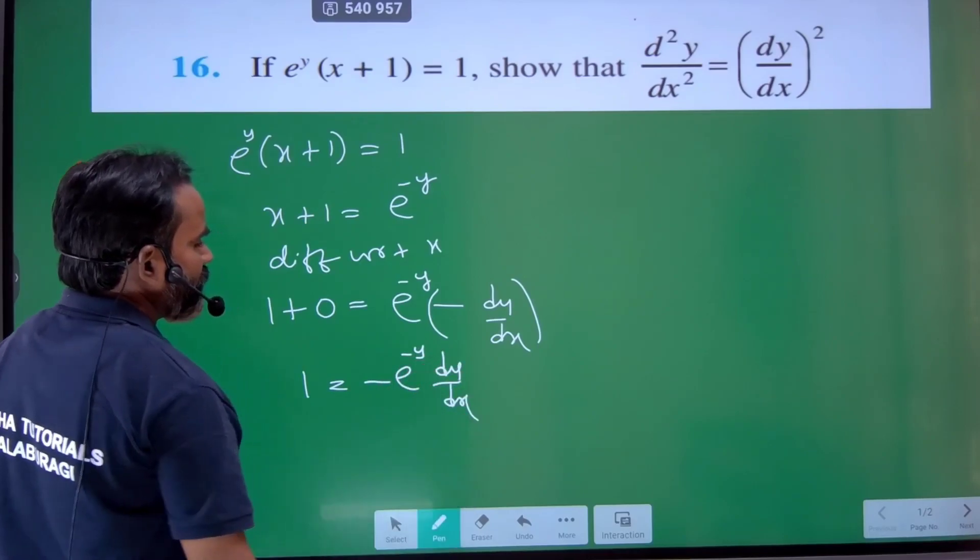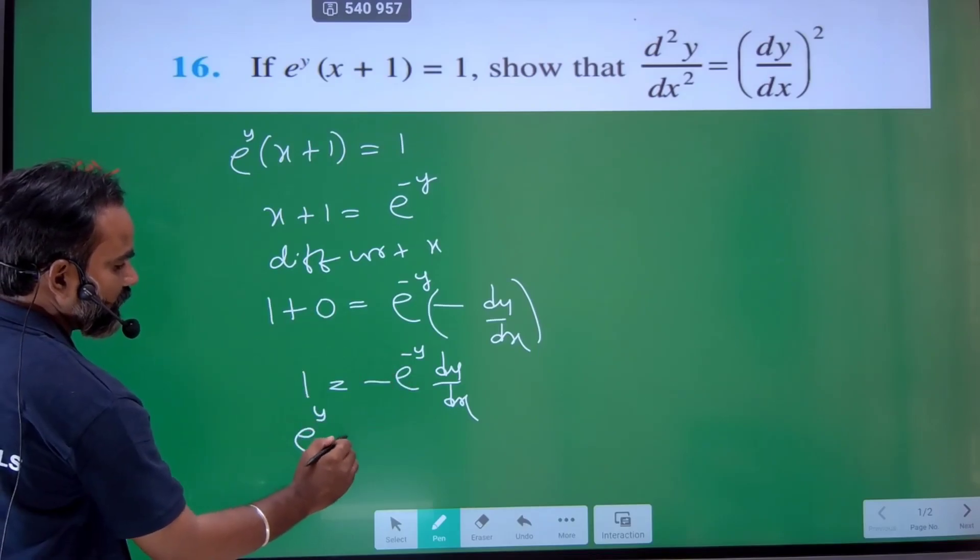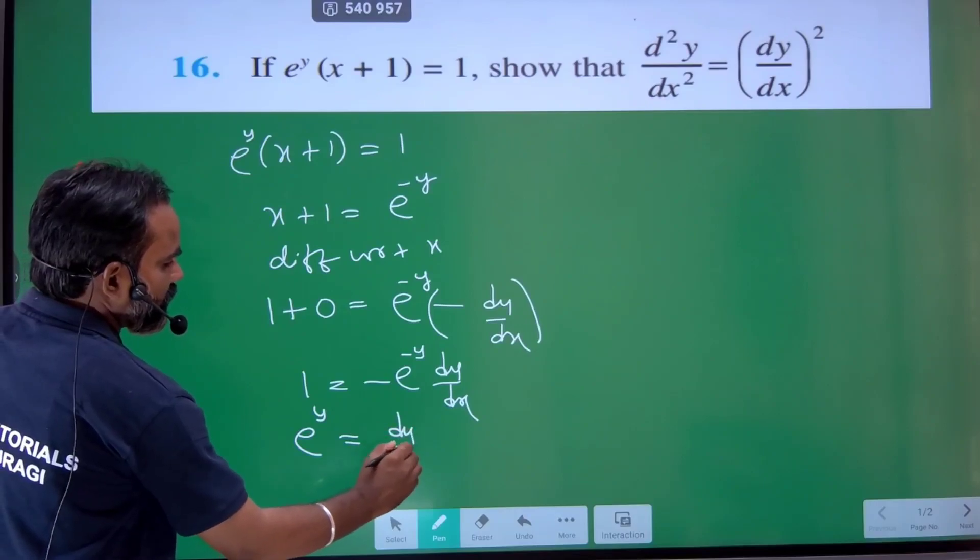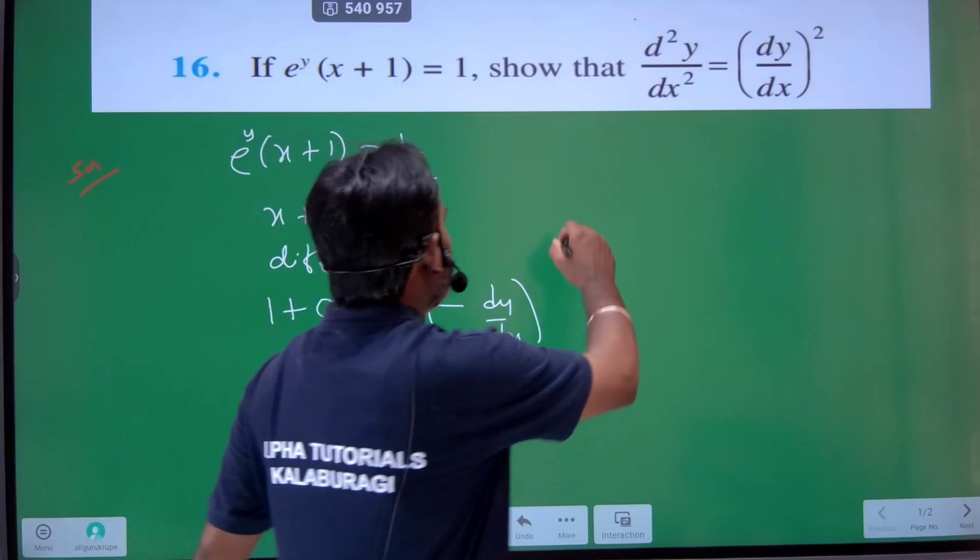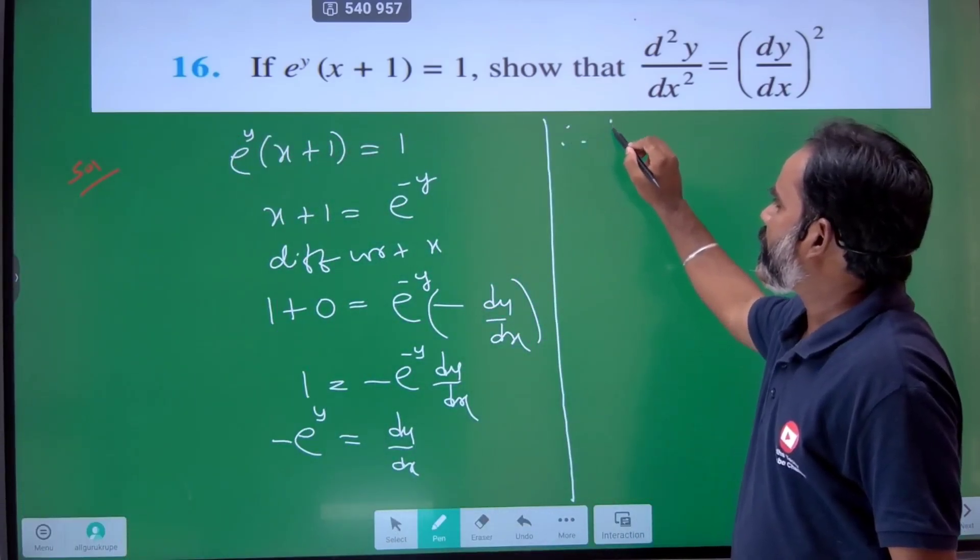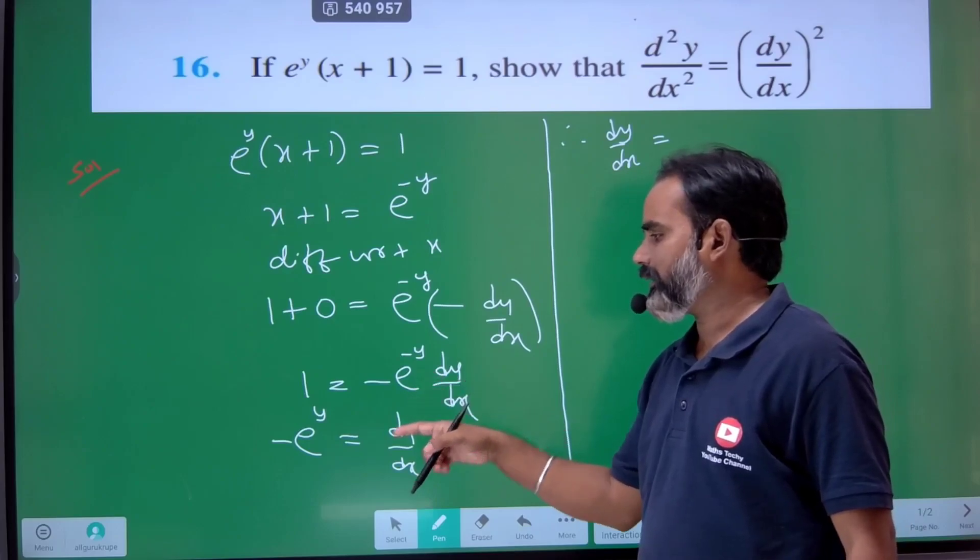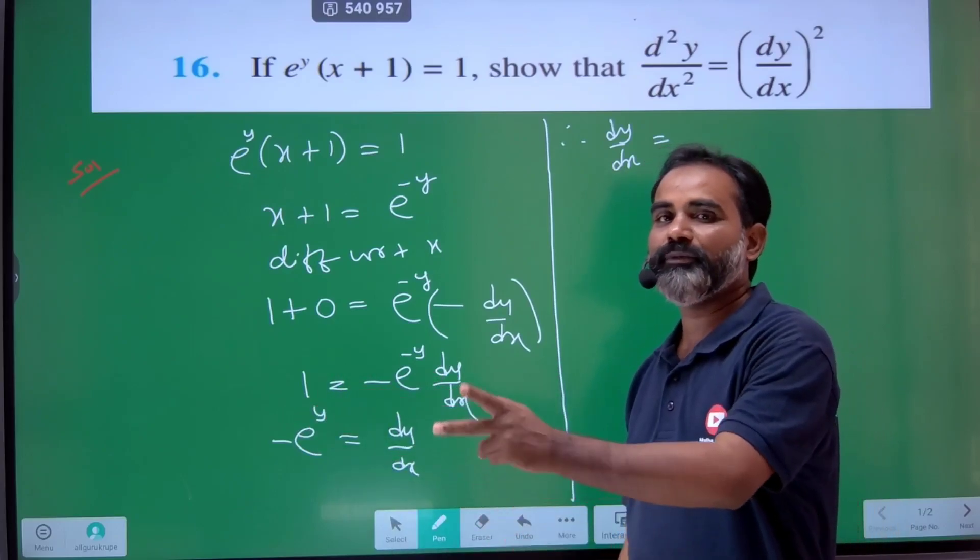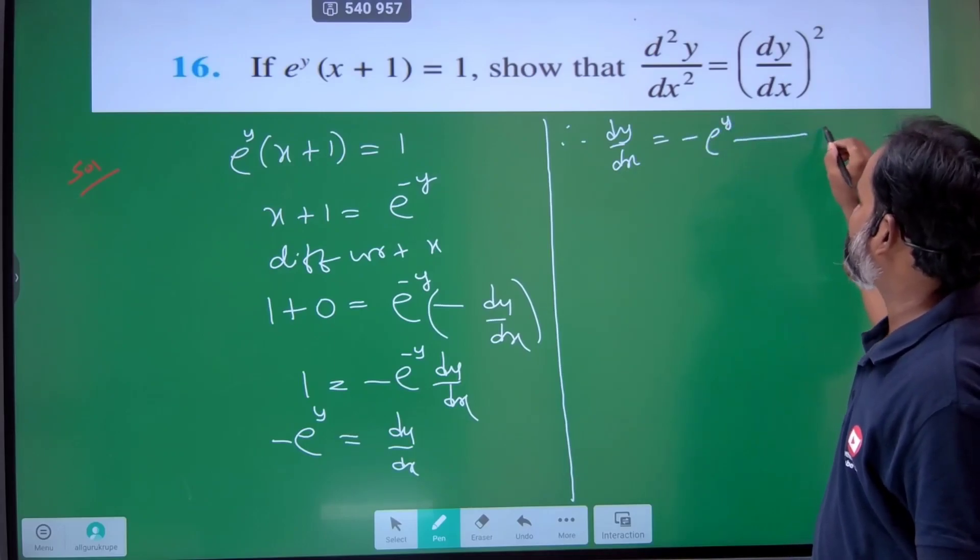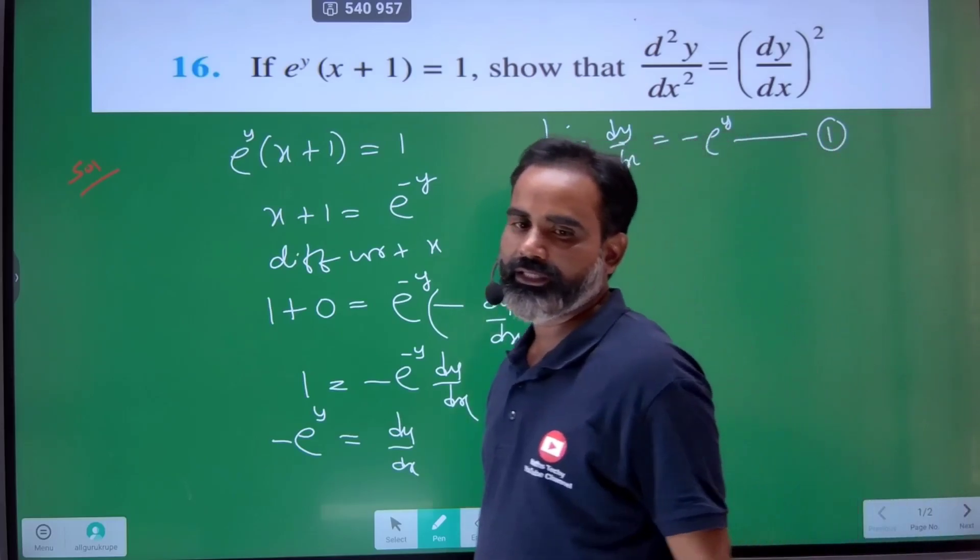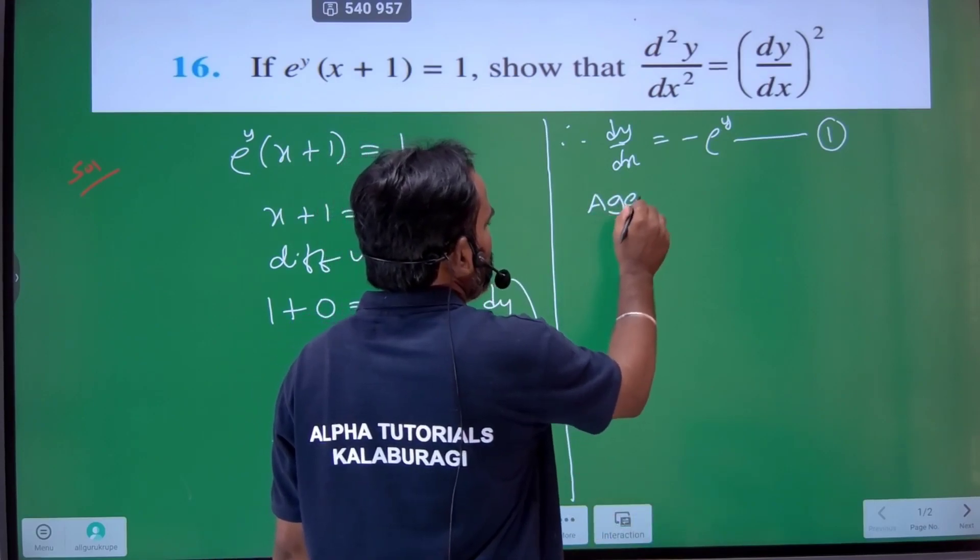1 plus 0 equals 1, which equals e to the power of minus y times dy by dx. Therefore, dy by dx equals minus e to the power of y. Multiply both sides by minus. Now I want the double differentiation also, so again differentiating with respect to x.